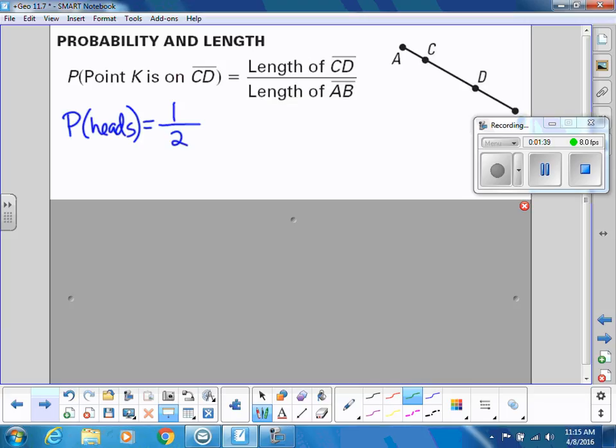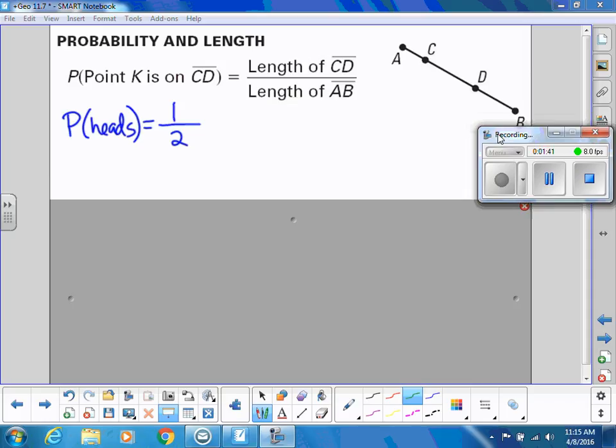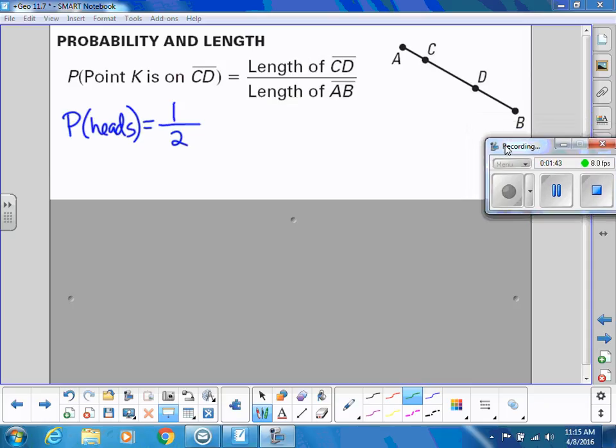So if I say what is the probability that point K—and point K is just any point on the segment AB—what is the probability that point K is on CD? The total possibilities is anything on AB, so we're talking about the length of AB. Then what's the probability of point K being on just this piece CD? Notice that CD is part of AB, so that would be the numerator.